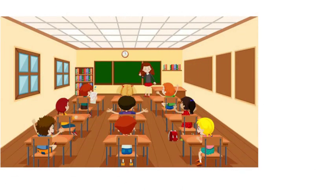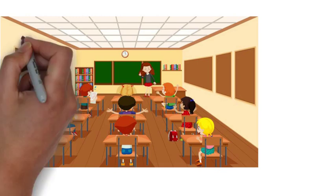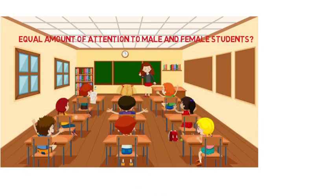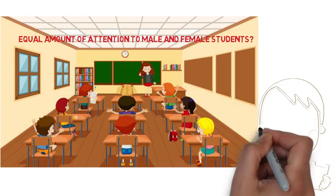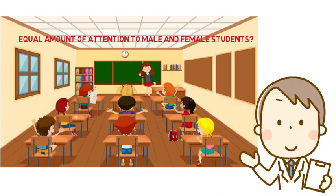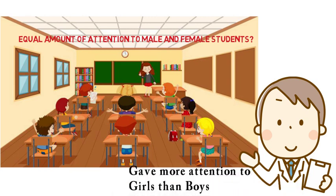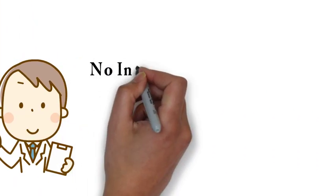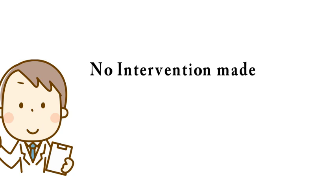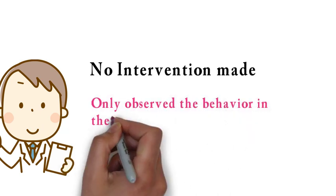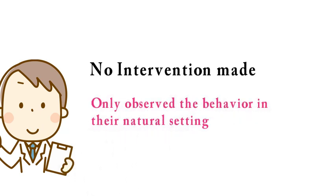A psychologist wanted to know if teachers give equal amounts of attention to their male and female students. So nag-observe ang psychologist sa isang classroom, with permission from the school but the teacher didn't know that she is the one being observed. What they found out is that most of the teachers gave more attention to girls than boys. We can see that walang ginawang intervention sa kanila ang psychologist — they only observed their subject's behavior in their natural setting, which is inside the classroom.